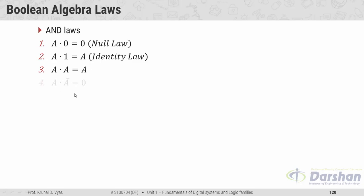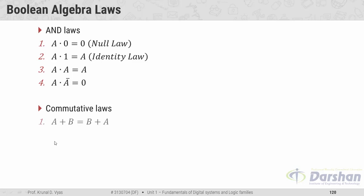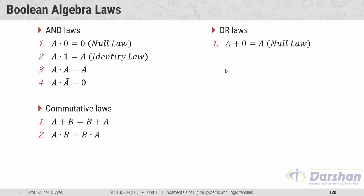The fourth AND law is: A AND A-bar equals zero, where A-bar represents the one's complement of the input. Zero AND one is zero, and one AND zero is zero. Next are the commutative laws: A OR B is always equal to B OR A, and A AND B is always equal to B AND A — the same as in mathematics.